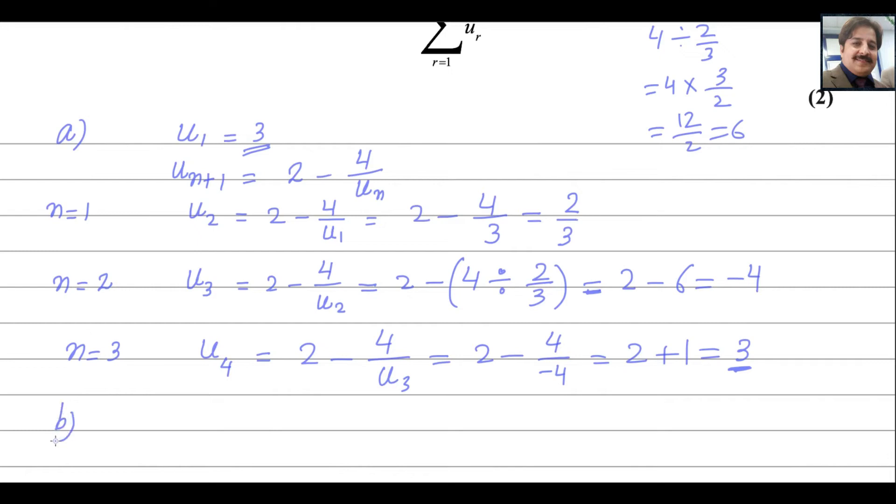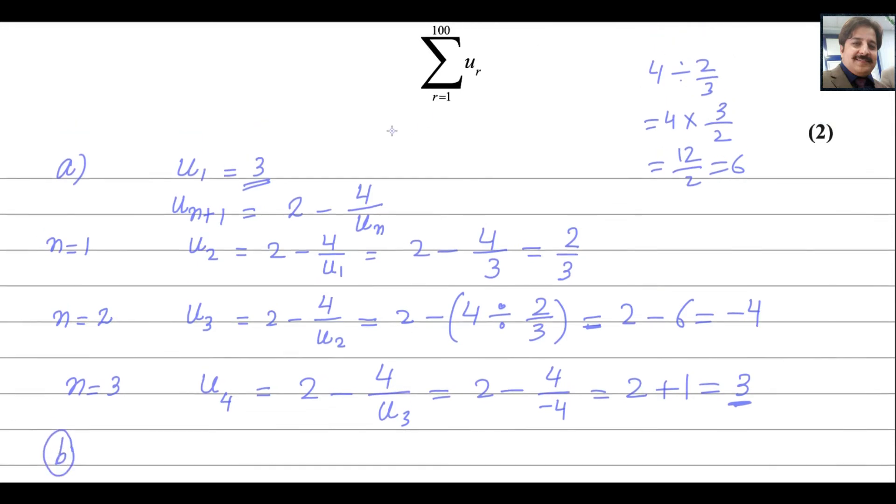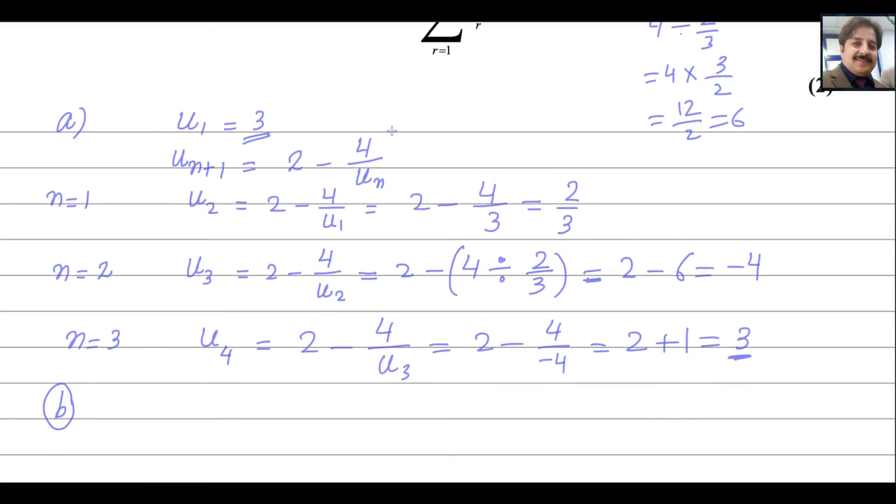For second part, we need to sum up to 100 terms like this. So it will be equals to R equals to 1 up to 100, UR. It means it is equals to U1 plus U2 plus U3 plus U4, it continues up to U100.